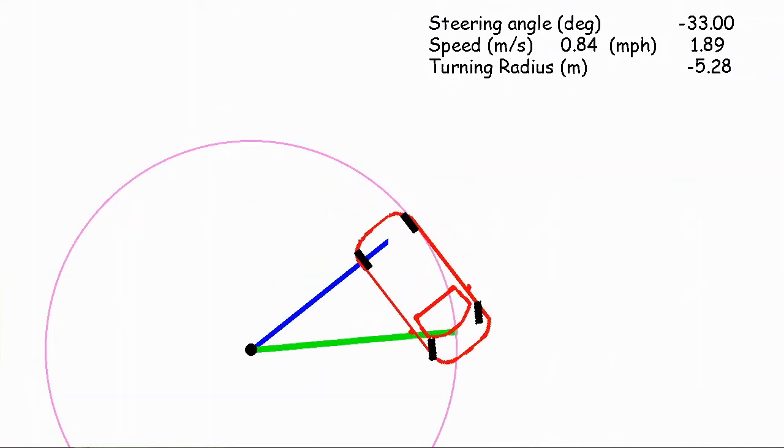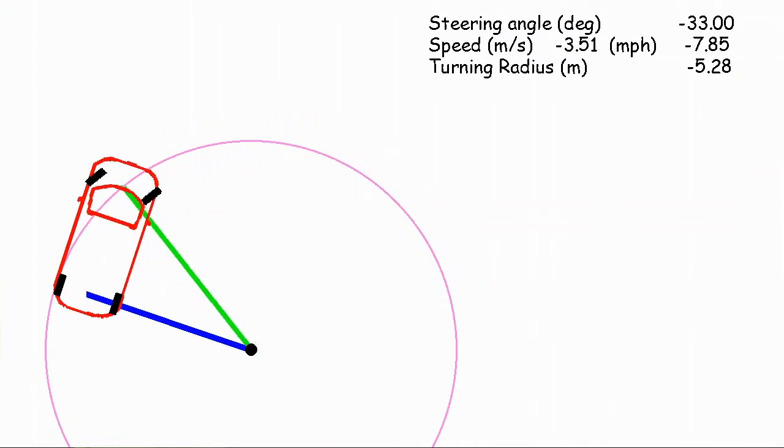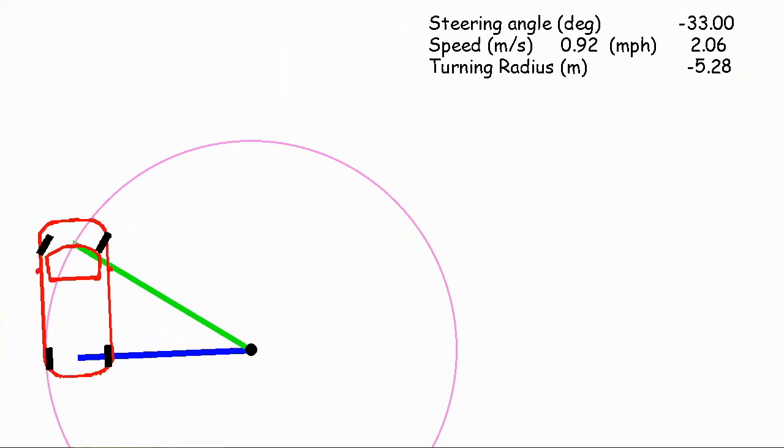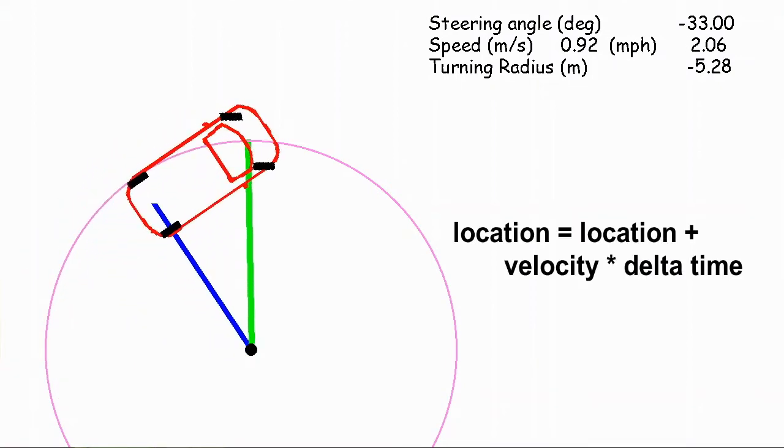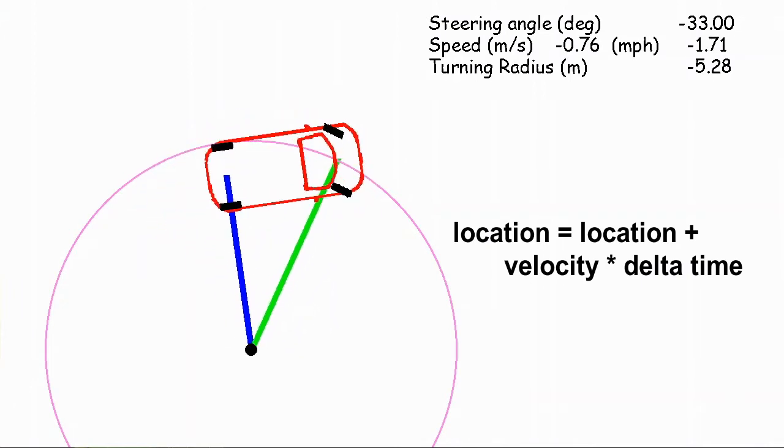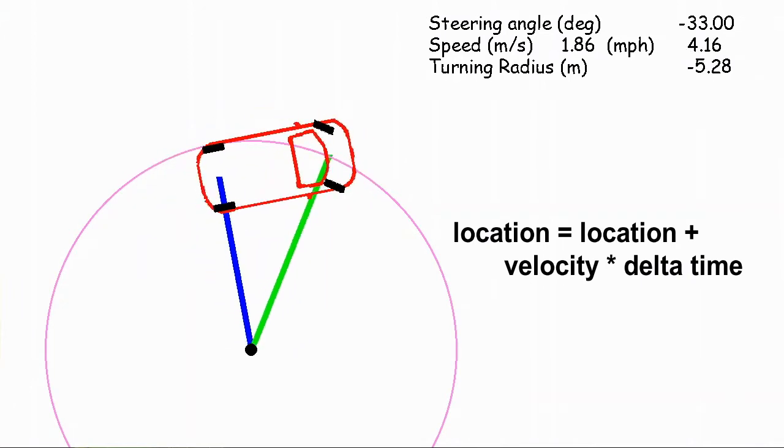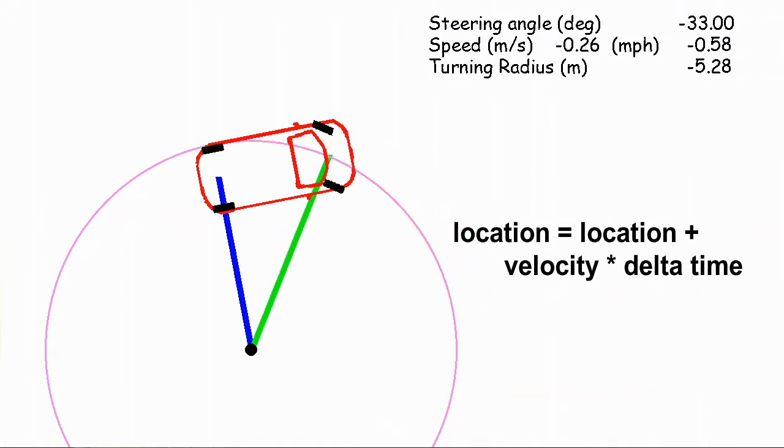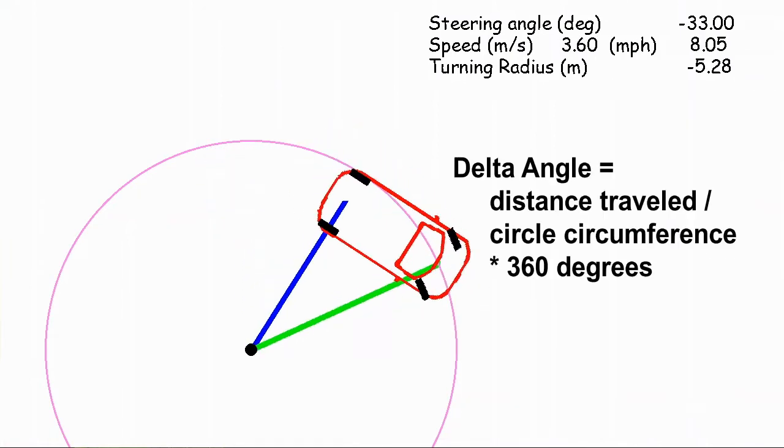What we're doing is every time step, we're updating the location of this car at whatever frequency we want. I have mine programmed at 60 times per second. Every 1/60th of a second, we will take this car's speed, move it a distance based upon the direction that it's pointing, and then we'll update its angle based upon how far that distance would be around the circumference of this circle.